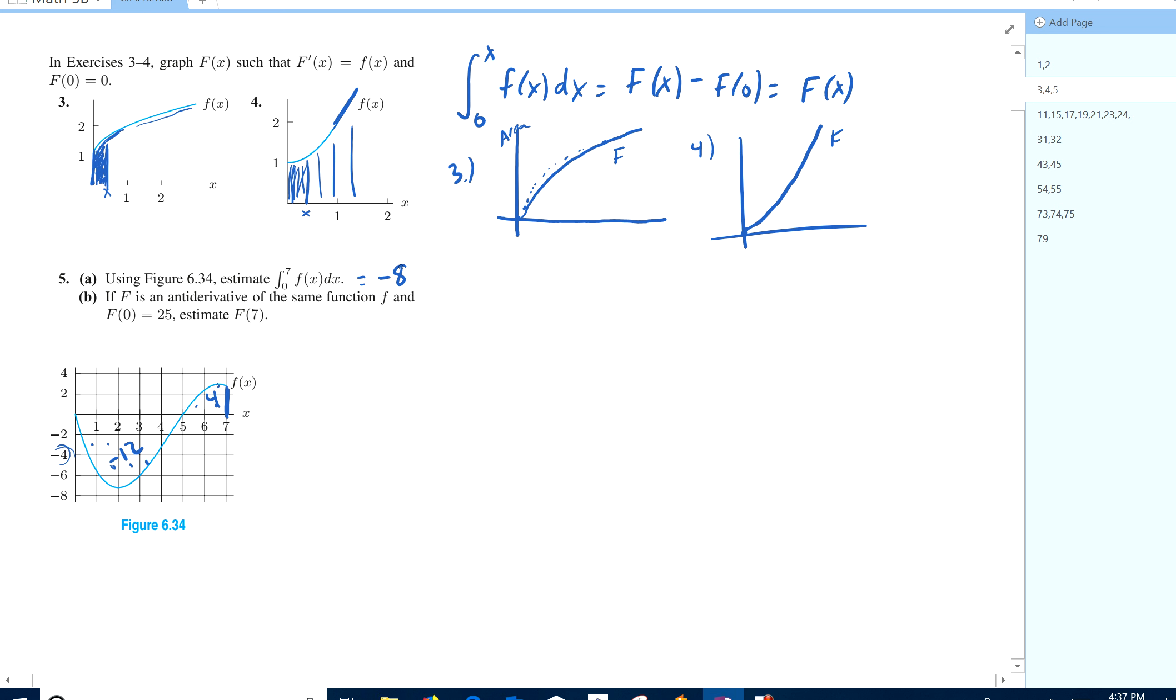And then if capital F is an antiderivative, and F of zero is 25, estimate F of seven. So if you roll from zero to seven, I know F of X is capital F of seven minus F of zero. All right, fundamental theorem of calculus. So F of seven is what we're trying to estimate. They told me F of zero is 25. And I estimate this to be negative eight. So then F of seven is approximately, if I add the 25, it would be, what, 17? All right, there you go.